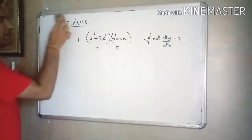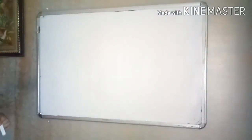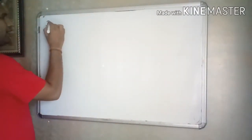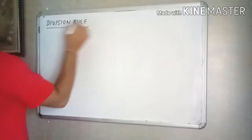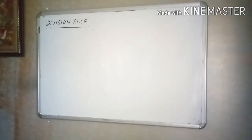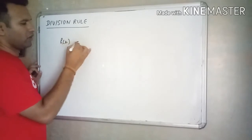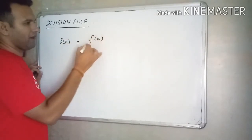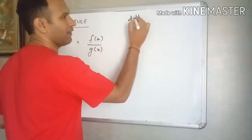Now we will talk about the division rule. So I have two functions in a fraction — f of x by g of x. This is called the u by v rule. The derivative of u by v is: second function into derivative of first function, minus first function into derivative of second function, all divided by second function squared. So the formula is: v du minus u dv divided by v square.